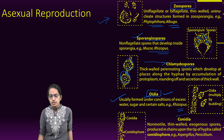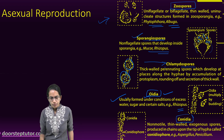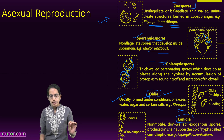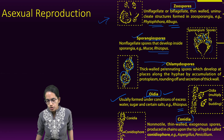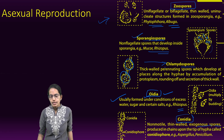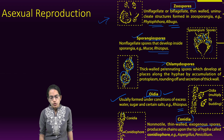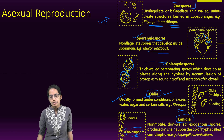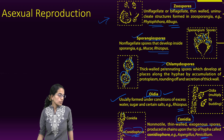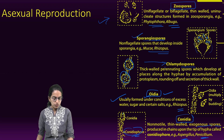The next is Conidia. Conidia are non-motile, thin-walled, exogenous spores and they are seen at the top of the hyphae. At the top of the hyphae, conidiospores are formed, and these are seen in Penicillium and Aspergillus — these are common examples.